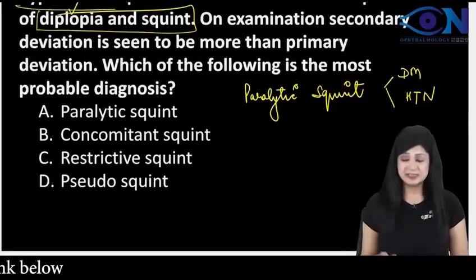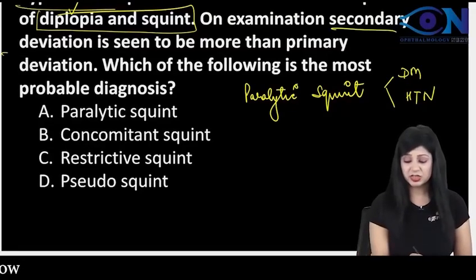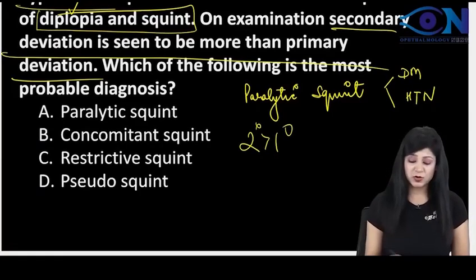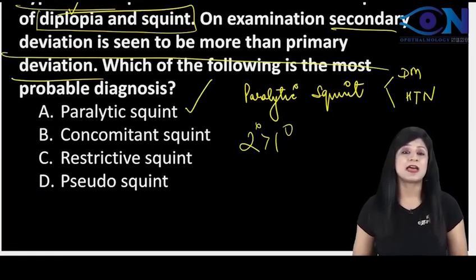Now, to confirm this, they are saying that the secondary deviation is more than the primary deviation. So if secondary deviation is more than primary deviation, you are sure that this is the case of the paralytic squint.